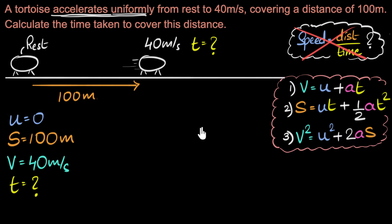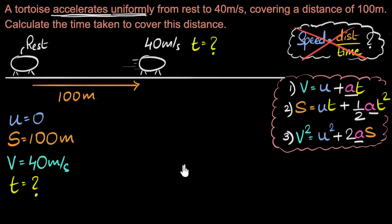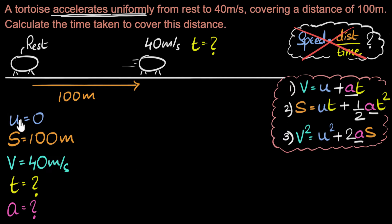If you're a little confused and couldn't pick any of the three equations, there's a good reason — all three equations contain A, and A is not given to us. Without finding the value of A, none of these equations are useful. So even though it's not asked in the problem, our first job is to calculate what A is, and then we'll calculate T.